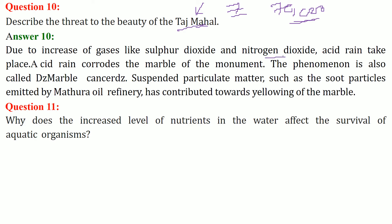This phenomenon of marble corrosion is known as marble cancer. Additionally, suspended particulate matter such as soot particles emitted by the Mathura oil refinery, located just near Agra, travels with the air and affects the Taj Mahal. As a result, the clean white marble of the Taj Mahal has already become yellow.